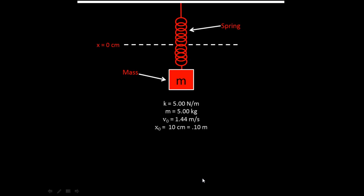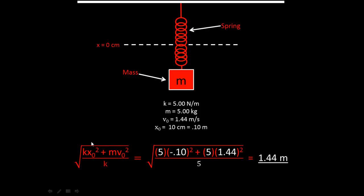The values are: k equals 5 newtons per meter, mass equals 5 kilograms, initial velocity equals 1.44 meters per second, and initial position equals 10 centimeters, or 0.10 meters in standard units. Plugging these into the derived equation gives an amplitude a of 1.44 meters.